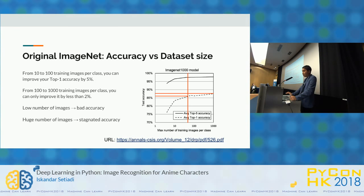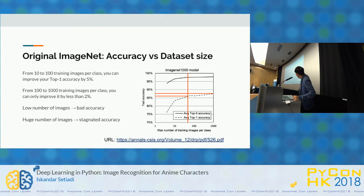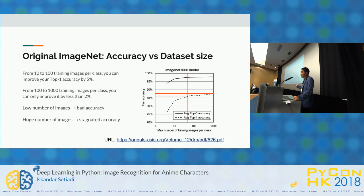This comparison is taken from the original ImageNet, showing accuracy versus data size. As you can see, when you increase the number of training images, accuracy increases. But at a certain point — around 100 or 200 images — it starts to stagnate and doesn't increase much anymore. At that point, adding more data doesn't help much, and you need to do something else to get better model performance.